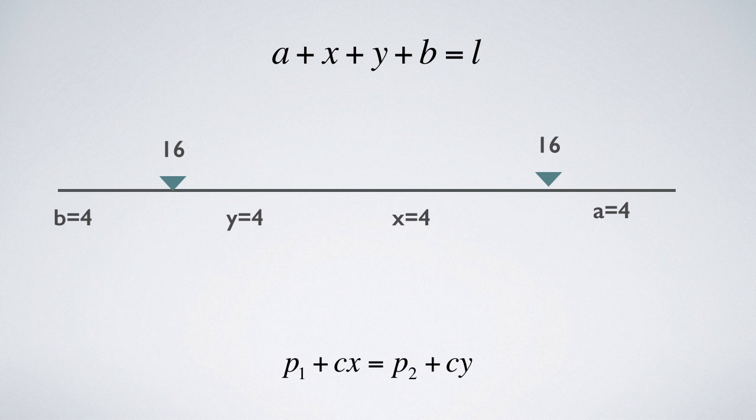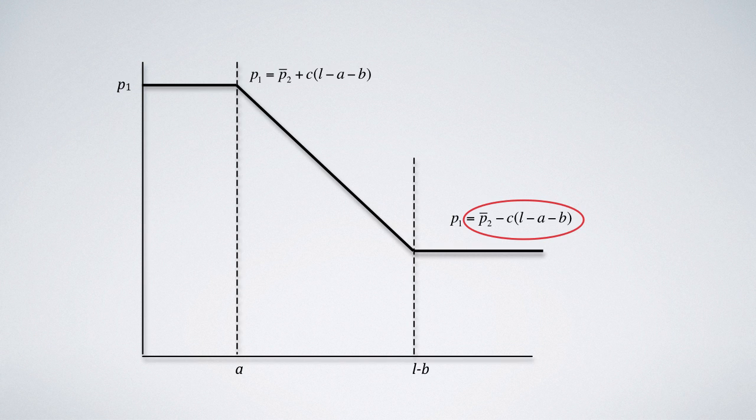Can seller 1 also set predatory price when they are at the quarter mark? The lower price is 16 minus bracket 16 minus 8, or 8, and the profit is 8 times 16, or 128. Hence, the results are equivalent, and there is no advantage for setting predatory price.